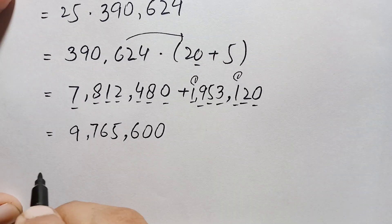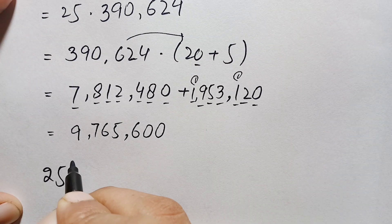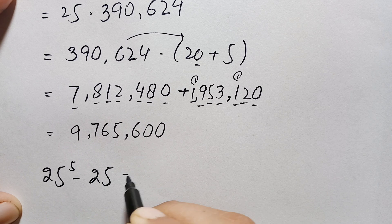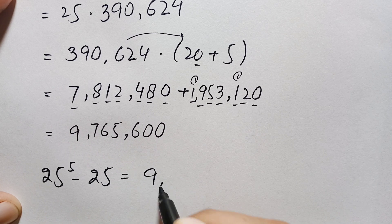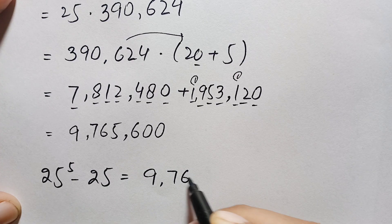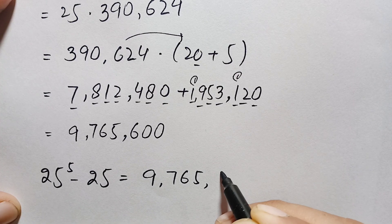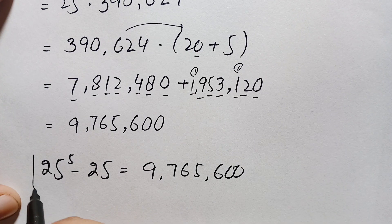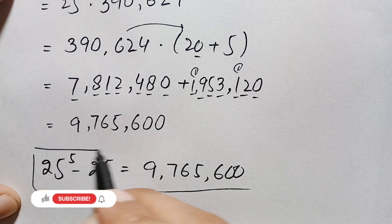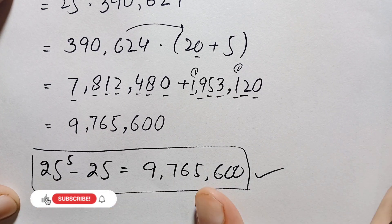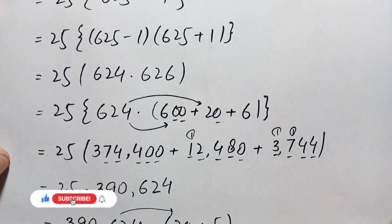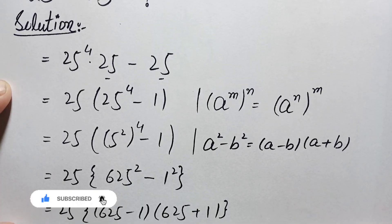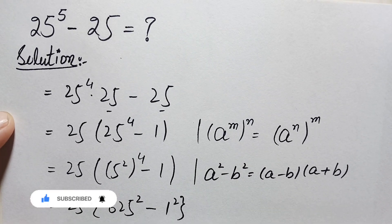So finally, the answer and value of 25 raised to the power 5 minus 25 is 9,765,600. This is our final answer. Don't forget to subscribe to my YouTube channel for more interesting exponential math problems. Thanks for watching.